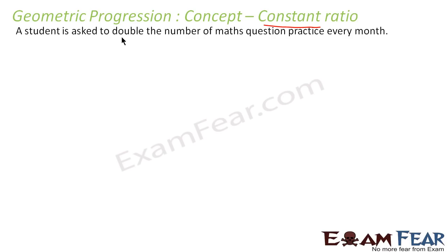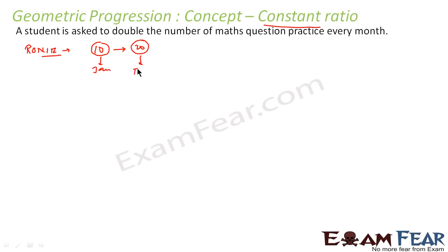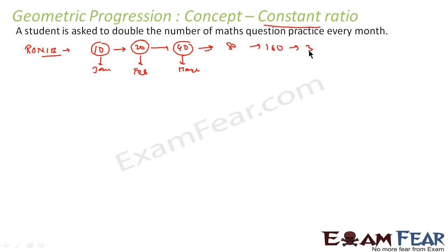For example, let this student be Ronnie. Ronnie used to solve 10 questions per day in January. His teacher asked him to double it every month, so in February he solves 20 questions per day, in March 40 questions per day, then 80 in April and 160 in May.